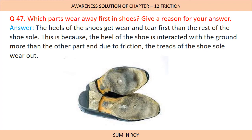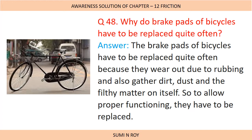Next question: Which part wears away first in shoes? The heels of the shoes get worn out first. This is because the heel interacts with the ground more than the other parts of the shoe, and due to friction, the threads of the shoe sole wear out. Next question: Why do brake pads of a bicycle have to be replaced quite often? Brake pads have to be replaced quite often because they wear out due to rubbing and also gather dirt, dust and other matter. To allow proper functioning, they have to be replaced so they can make a better grip with the rim of the cycle.